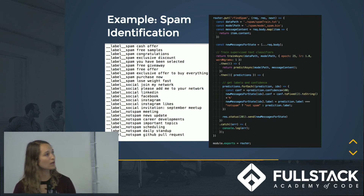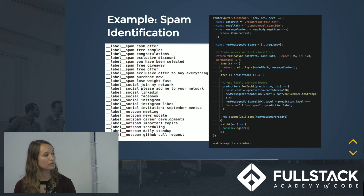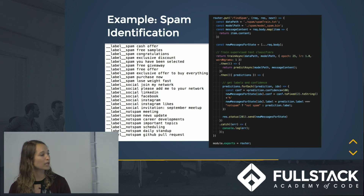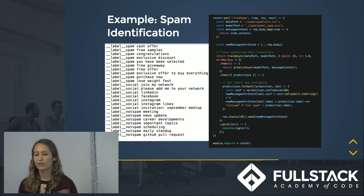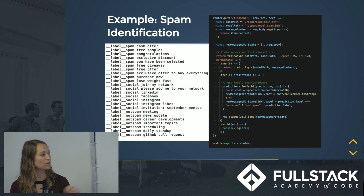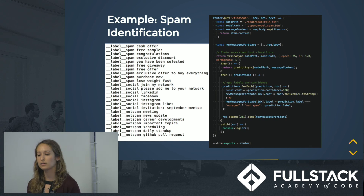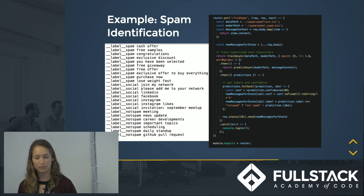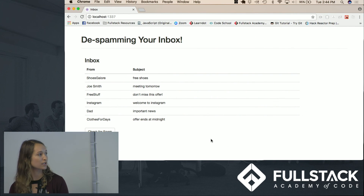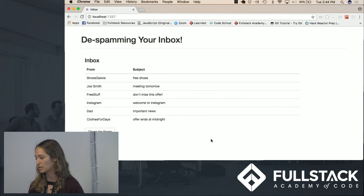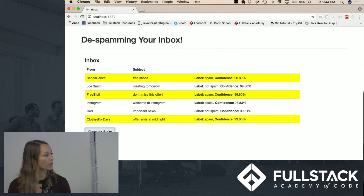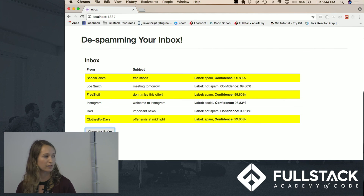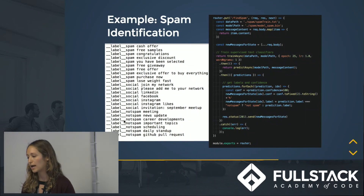Lastly, I want to walk through a small example I built myself: spam identification. There's a JavaScript interface for fastText, which I used to integrate it into a small application. I have a variety of email subjects classified as spam, not spam, or social, and I build a model with fastText using this input. Applied to an example inbox, clicking 'check for spam' creates the model, labels emails it thinks are spam, and outputs the confidence level in each categorization.